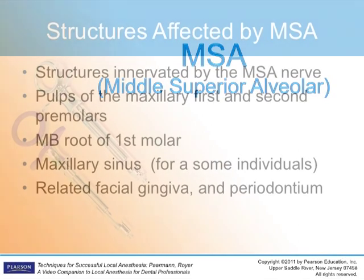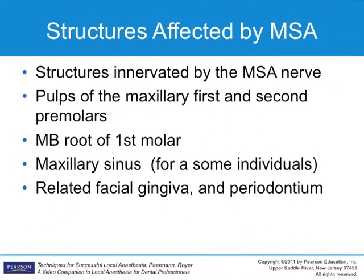The middle superior alveolar or MSA injection is an infiltration type of injection that innervates the pulpal and osseous tissues, periodontal ligaments, buccal gingiva, and vestibular mucosa of the maxillary premolars and the mesial buccal root of the first molar.